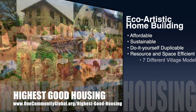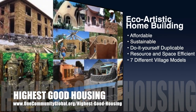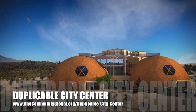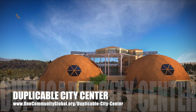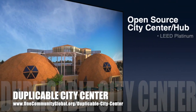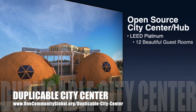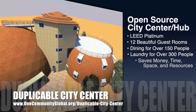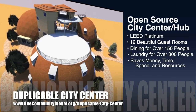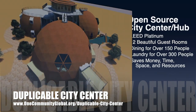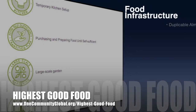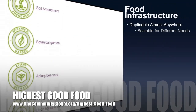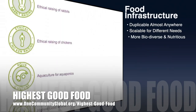The One Community approach to highest good housing is eco-artistic home building that is affordable, sustainable, do-it-yourself duplicable, resource and space efficient, and consists of seven different sustainably constructed village models. One Community is also creating an open source duplicable city center designed to be LEED platinum certified, provide 12 guest rooms, dining for over 150 people, and laundry and recreation space for over 300 people, all while saving money, time, space, and resources.